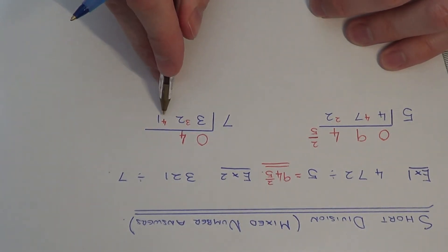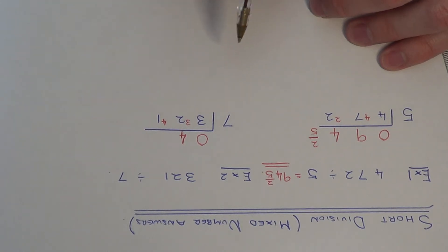Finally we have 41 divided by 7. This goes 5 times and the remainder is 6.